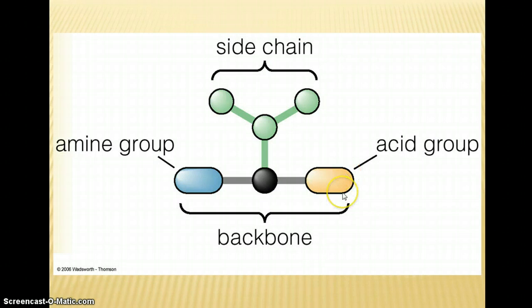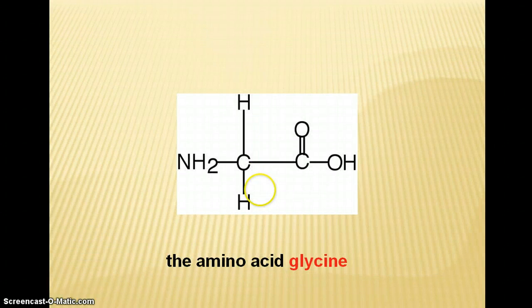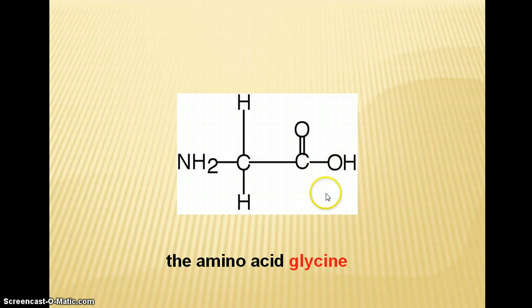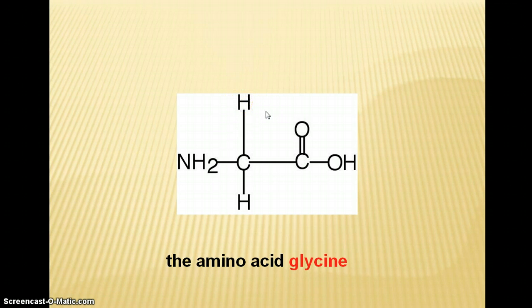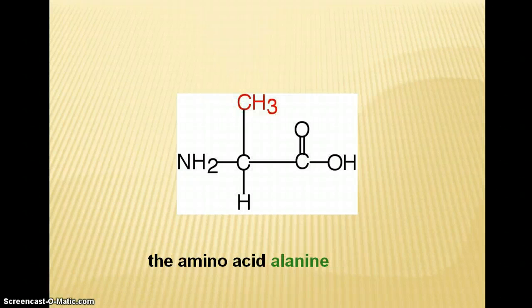Here's the acid or carboxyl group, and then here's the side chain. Looking at a more detailed view: again, we have the central carbon with the hydrogen, the nitrogen or amine group, and the acid or carboxyl group. This is the amino acid glycine. Can you see what the side chain would be? Remember, all amino acids are going to have this common backbone, so the side chain here is just a hydrogen — a very simple side chain, making glycine one of the most simple amino acids. Here is a different amino acid, alanine, and the side chain here is a methyl group.